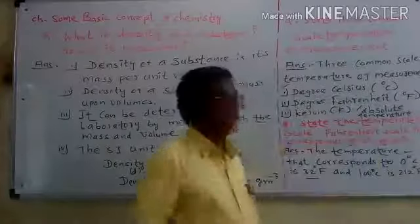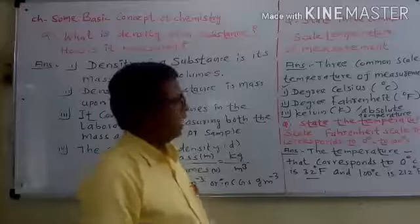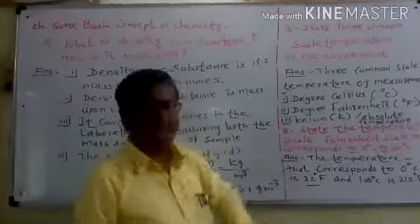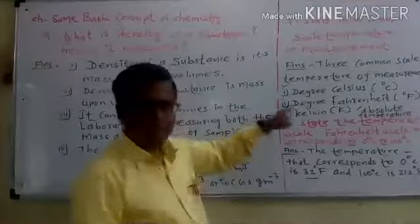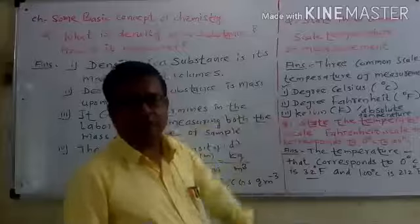Now we can calculate these scales. In case of temperature, the first one is degree Celsius, next one is degree Fahrenheit, and the scale capital K is for absolute temperature.